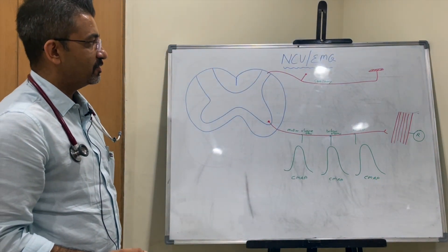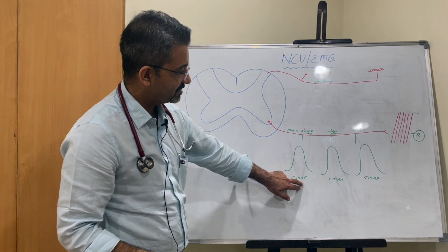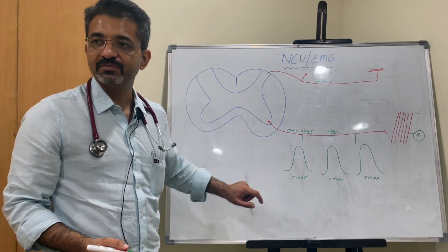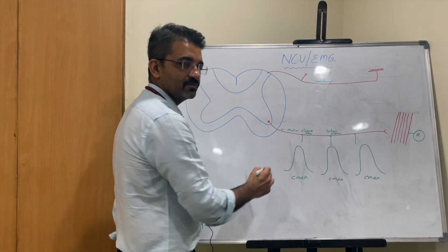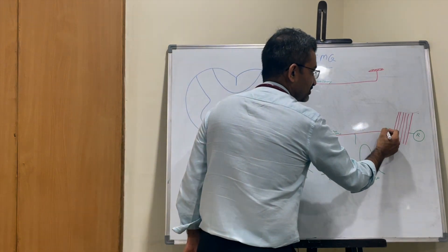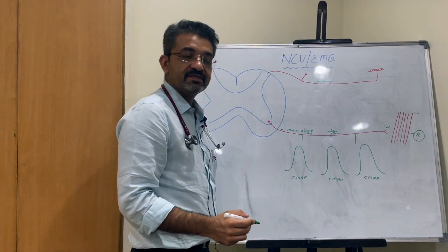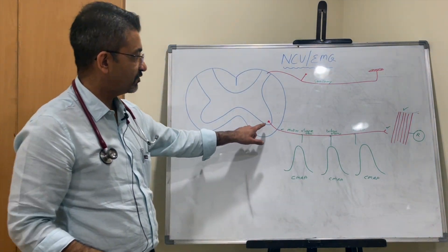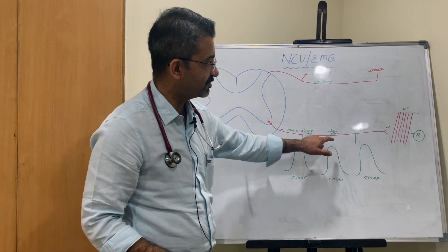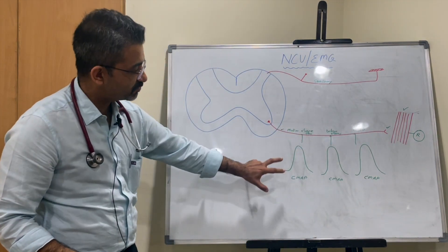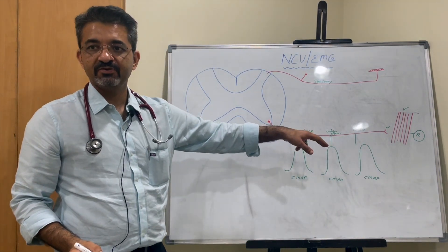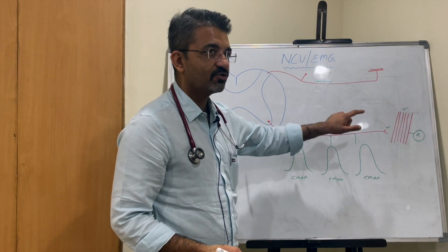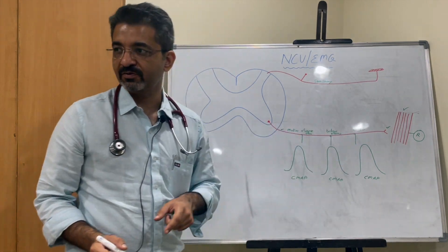When we talk about compound muscle action potential, we are talking about the motor nerve. It tells you the health of the nerve is good, the health of the neuromuscular junction is good, and indirectly that the muscle is also good. Any problem from the anterior horn cell downwards to the muscle will give rise to some problem in your CMAP. So a robust CMAP gives you a lot of information.